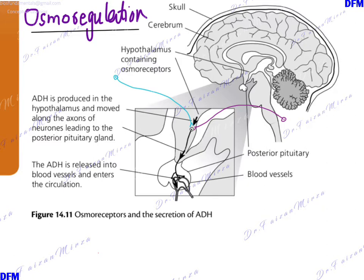The osmoreceptors of hypothalamus are fed this information from the baroreceptors from the heart that are monitoring the blood pressure, as well as the osmoreceptors which are present within the hypothalamus. So the hypothalamus is receiving information regarding the blood pressure as well as the water content of your blood.